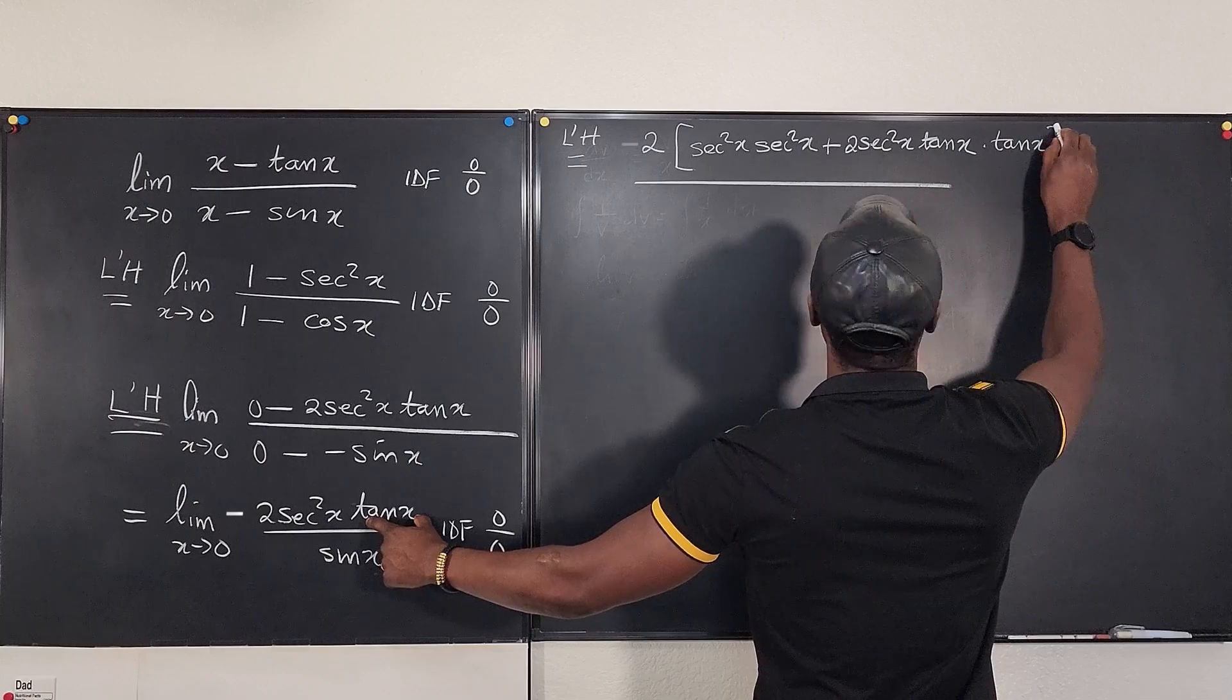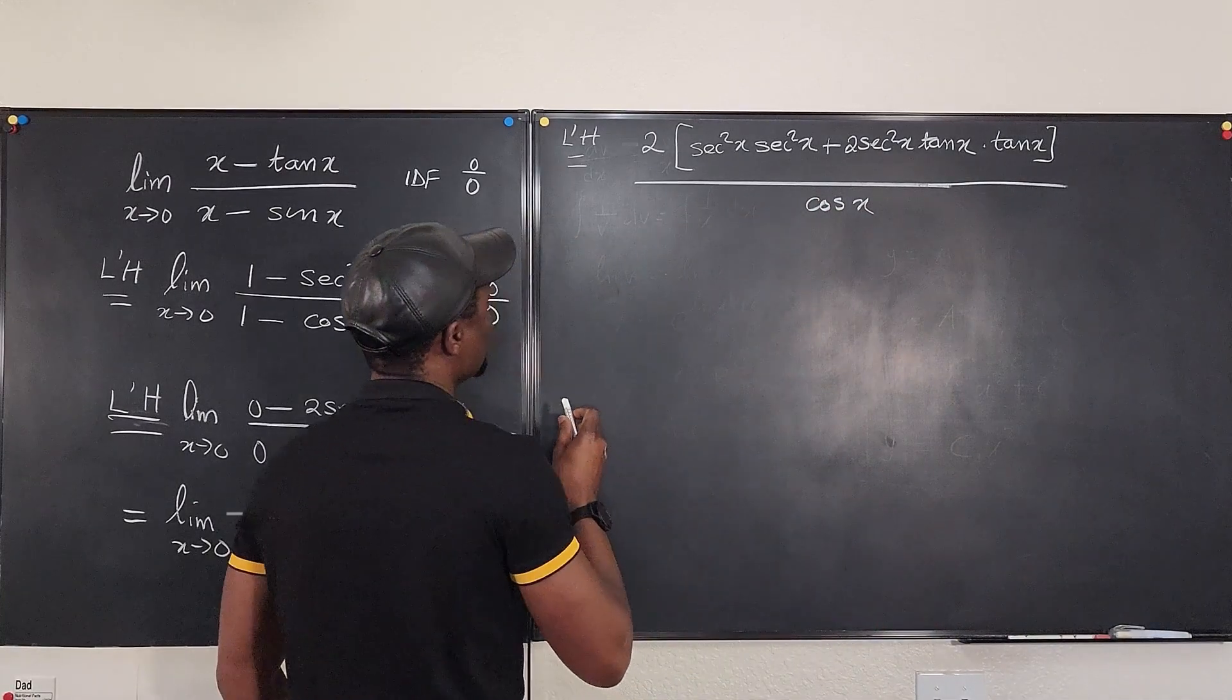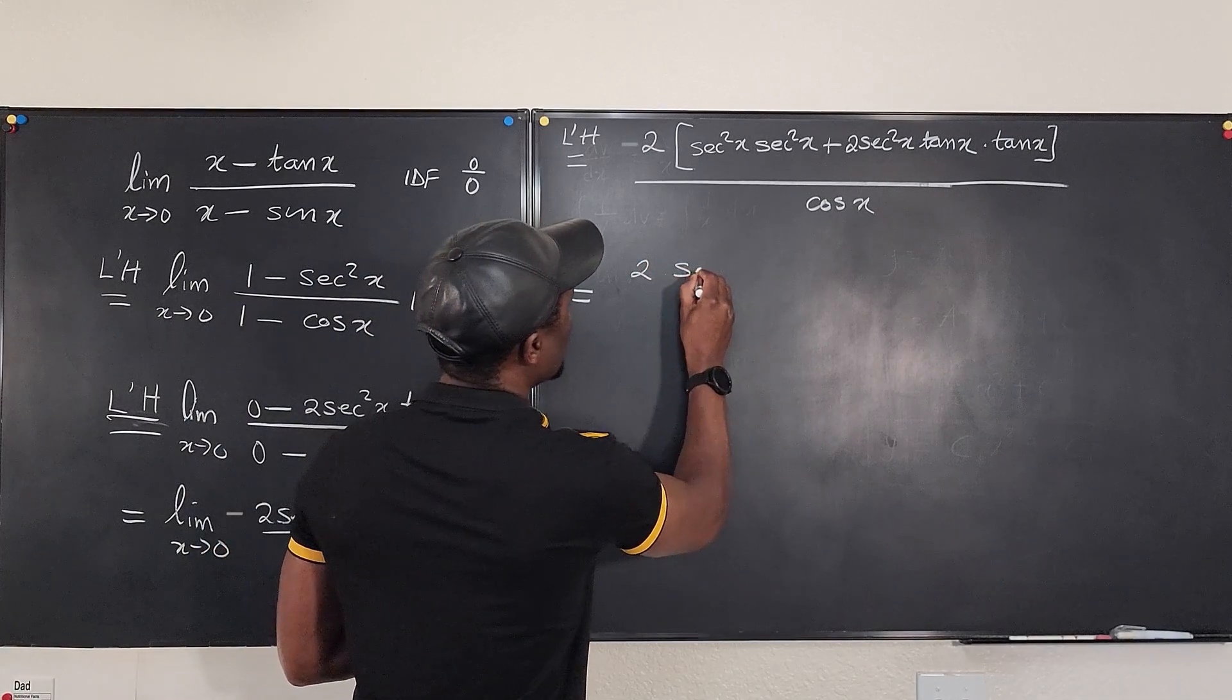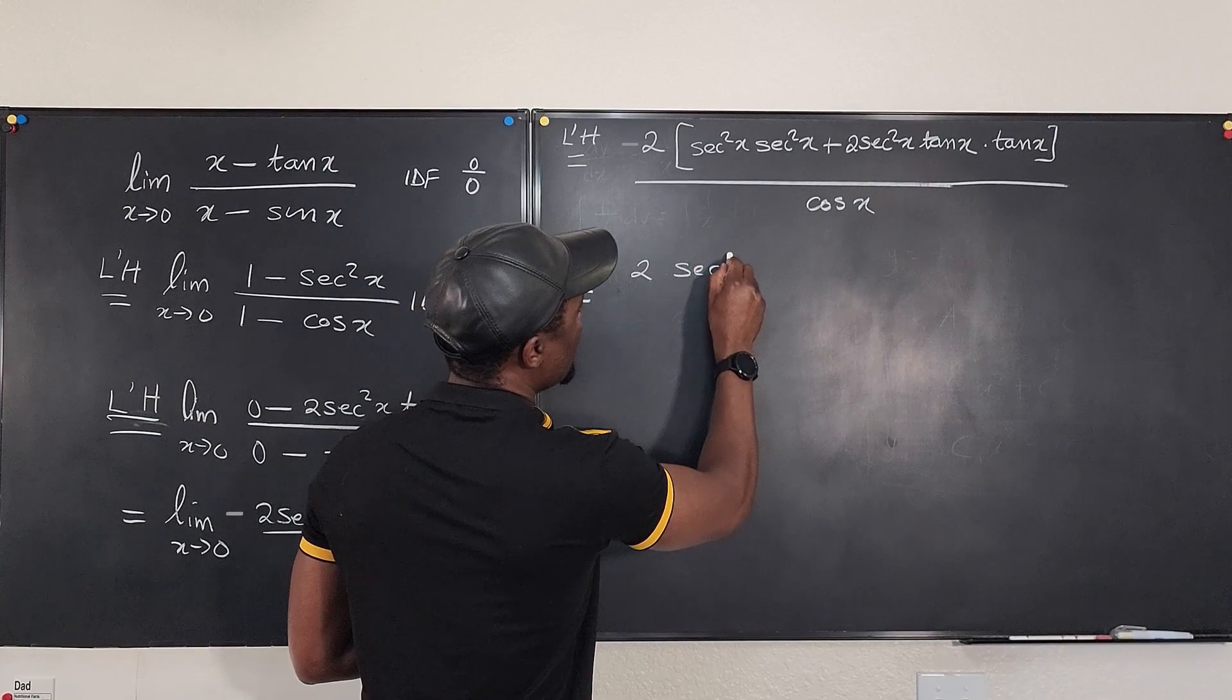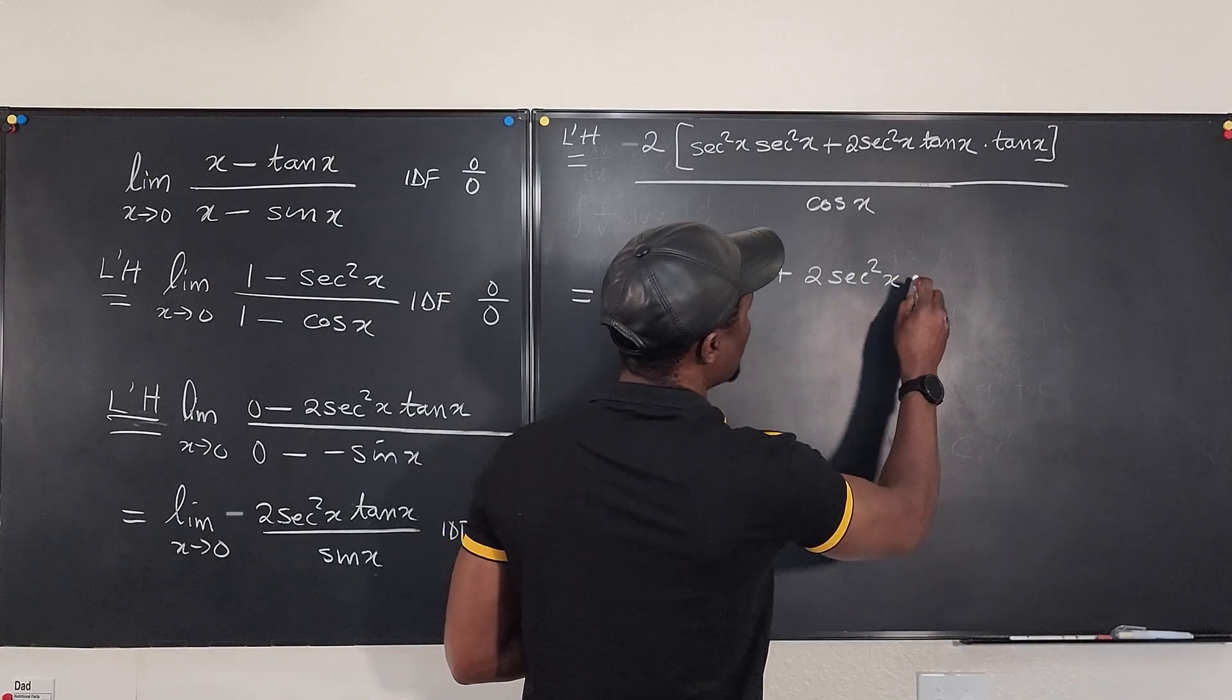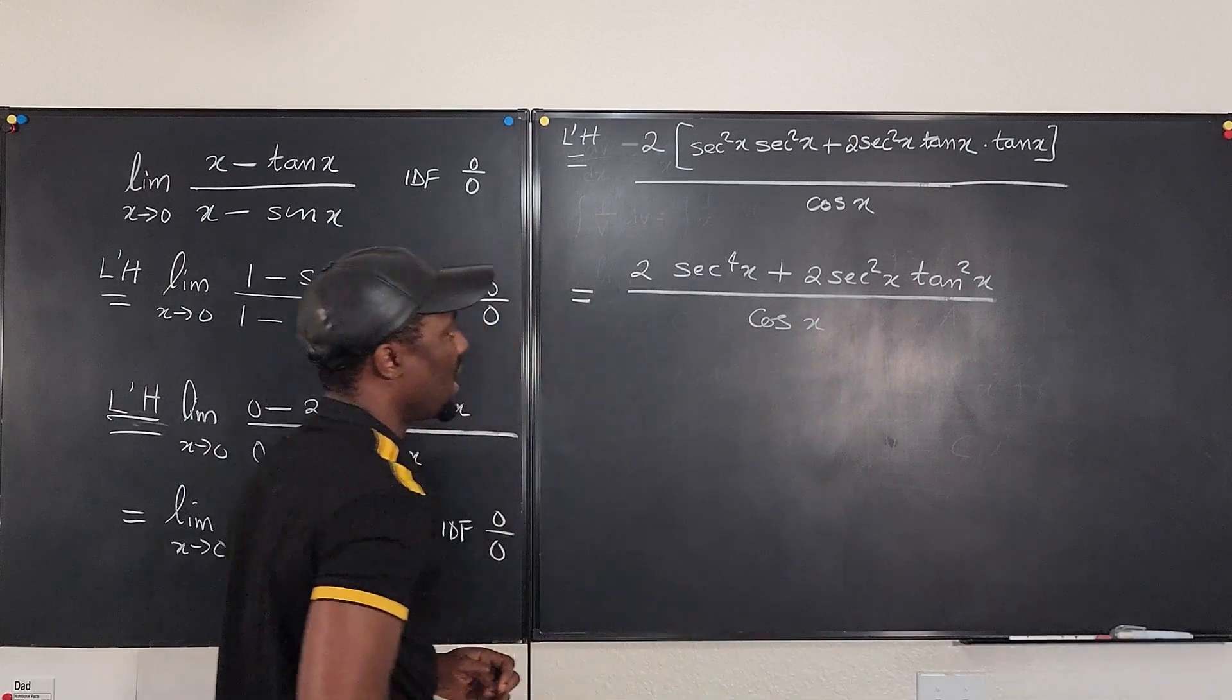Wow, that's crazy. That's the derivative of the top. And then the bottom is going to be just cosine x. Now let's move on. So what do we have on the inside? This is going to be 2 secant to the fourth x, plus, this is going to be 2 secant squared x tan squared x over cosine x.